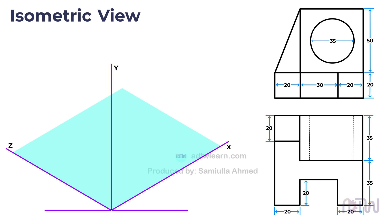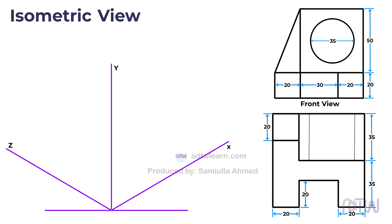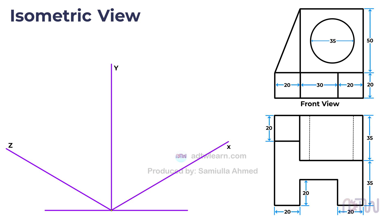The top view of the object is always drawn in the x-z plane, so that's another key point to keep in mind. Since we will be using the first angle method to solve all the problems, the top figure will be the front view of the object, while the bottom figure will be the top view. Remembering these important points will help us accurately construct the isometric view.